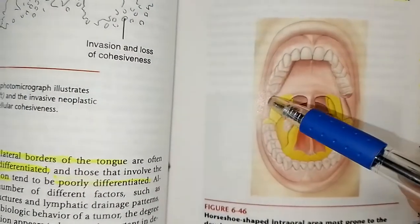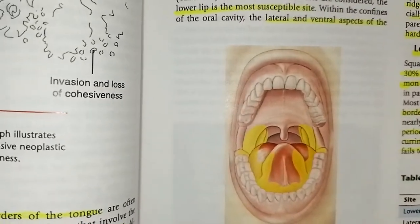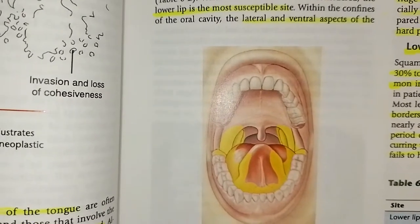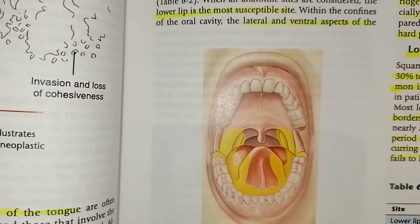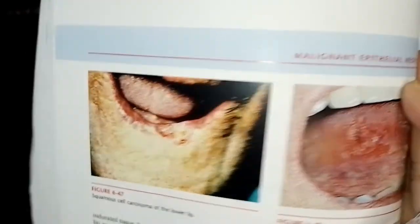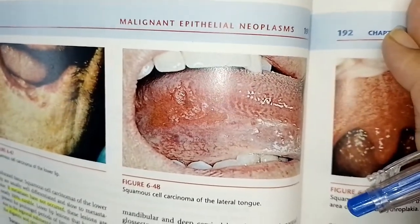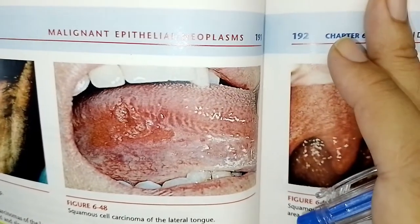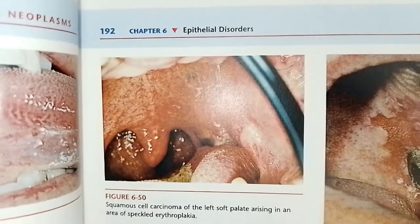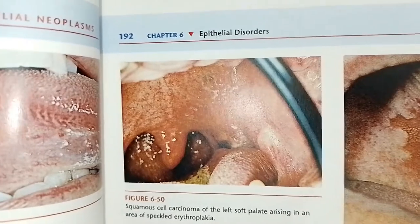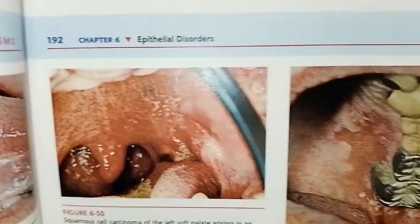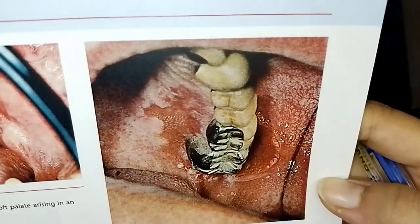The intraoral horseshoe-shaped lesion area is most prone to squamous cell carcinoma development due to saliva drainage — this includes the anterior floor of the mouth, lateral borders of the tongue, tonsillar pillars, and lateral soft palate. Images shown include squamous cell carcinoma of the lower lip, anterior floor of the mouth, left soft palate, gingiva and alveolar ridges, and buccal mucosa.